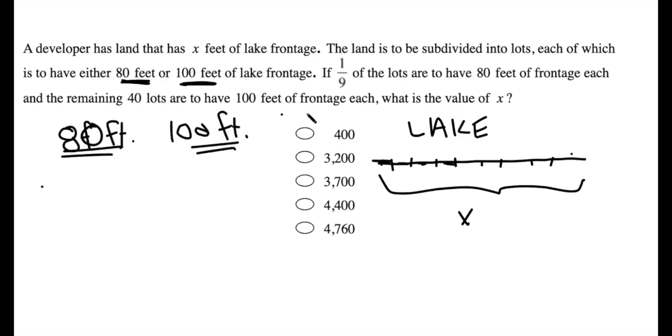Okay, now the problem tells us that one-ninth of these lots, however many there are, are going to be 80-foot lots. So I don't know how many total lots there are yet, but I do know that one-ninth of them, or one-ninth of the total number of lots, are 80-foot lots.